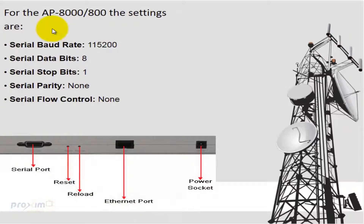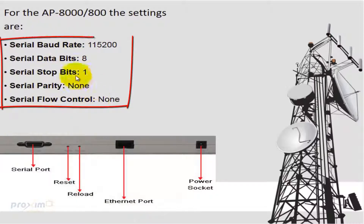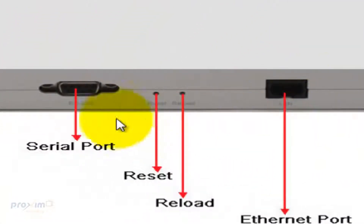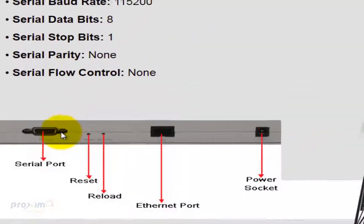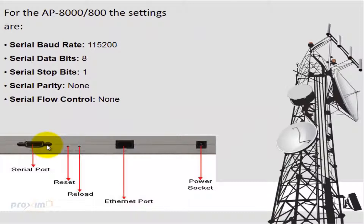On the AP8800 side, the settings are fairly similar but the baud rate is 115200 — that's the only difference. Everything else is the same: data bits is 8, stop bits is 1, parity and flow control are both none. Here is the serial port on the AP8800 radio. Unfortunately, the AP8100 does not have a serial port, so we just do troubleshooting the old-fashioned way.